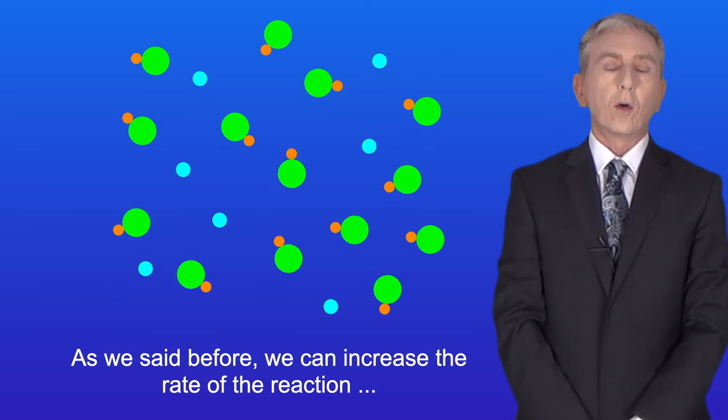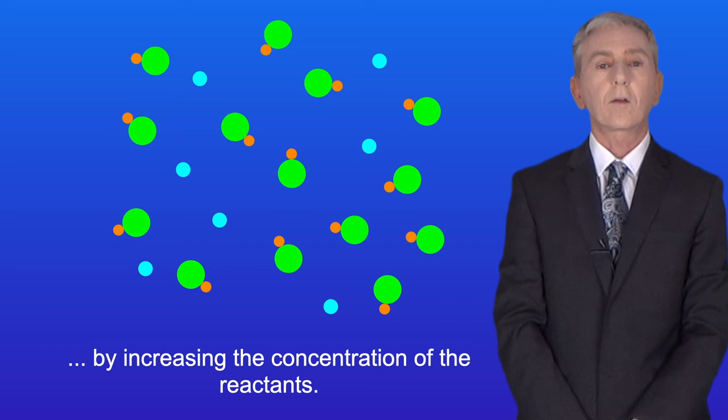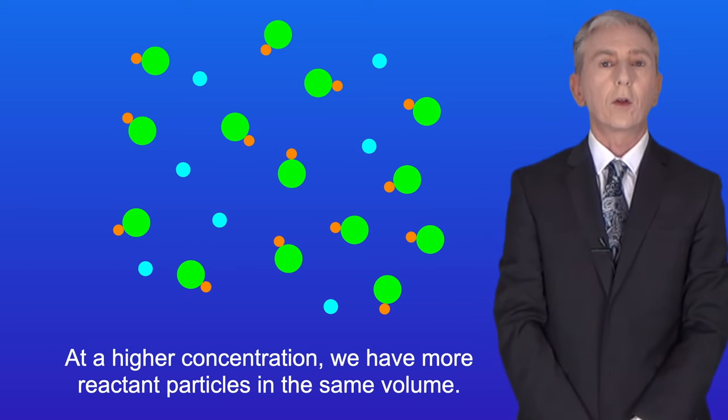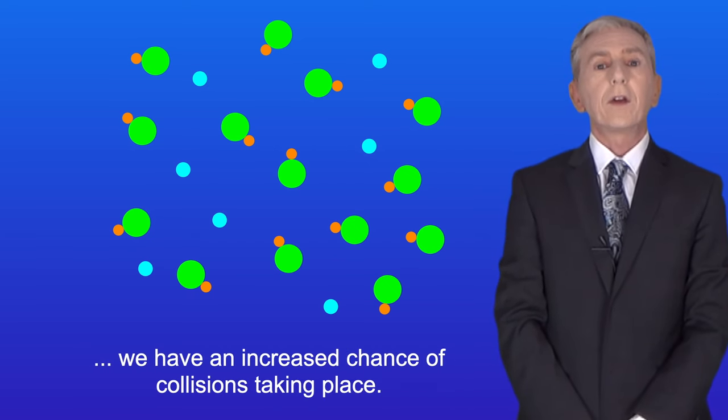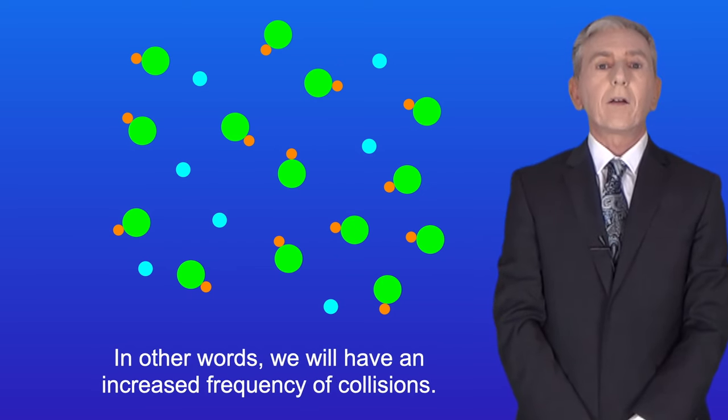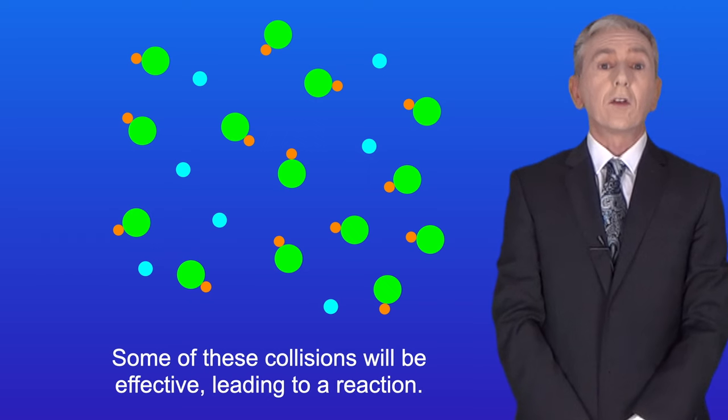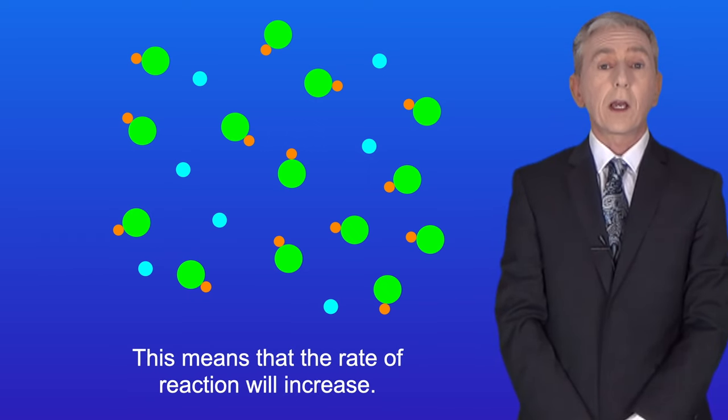Now as we said before, we can increase the rate of the reaction by increasing the concentration of the reactants. At a higher concentration, we have more reactant particles in the same volume. Because the reactant particles are closer together, we have an increased chance of collisions taking place. In other words, we'll have an increased frequency of collisions. Some of these collisions will be effective, leading to a reaction. And this means that the rate of reaction will increase.